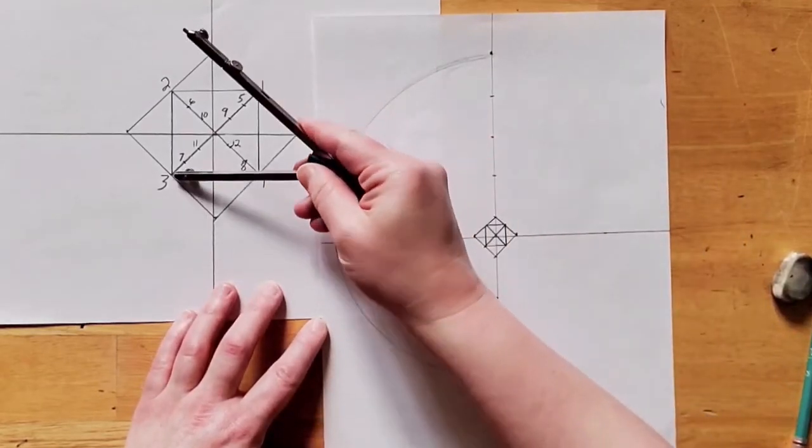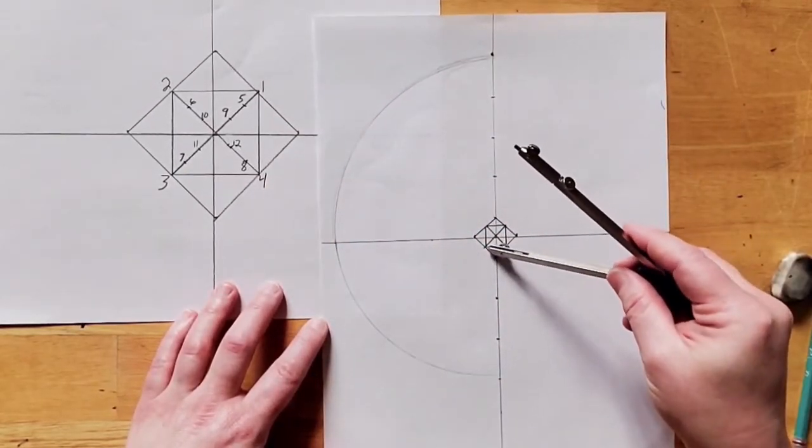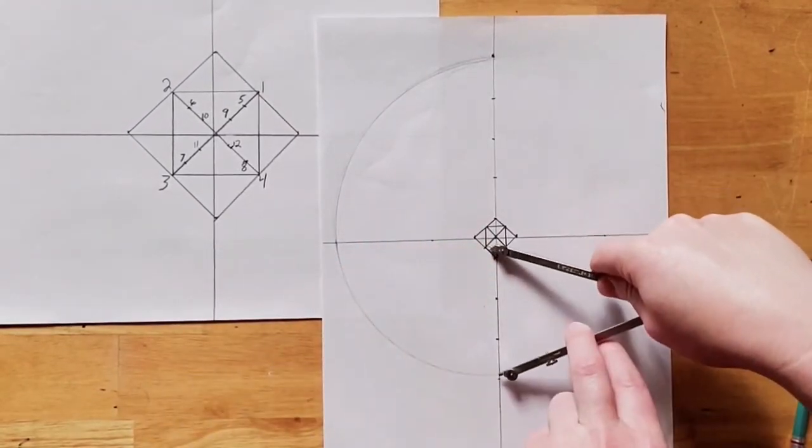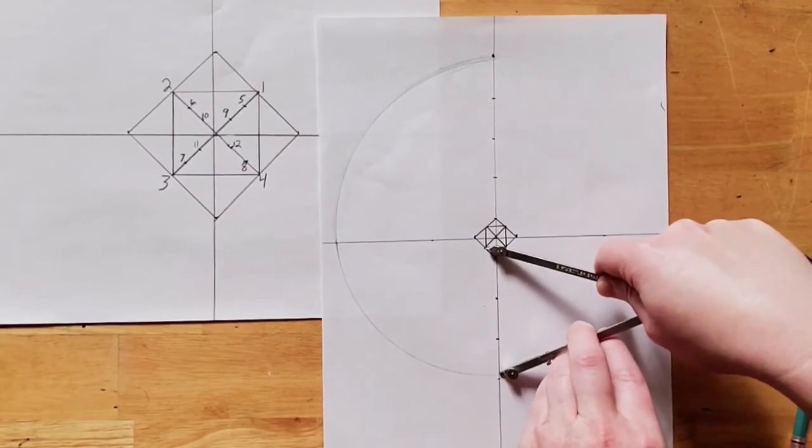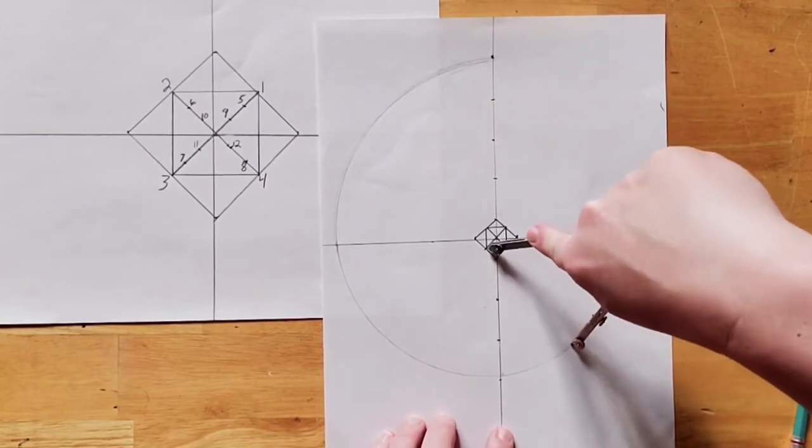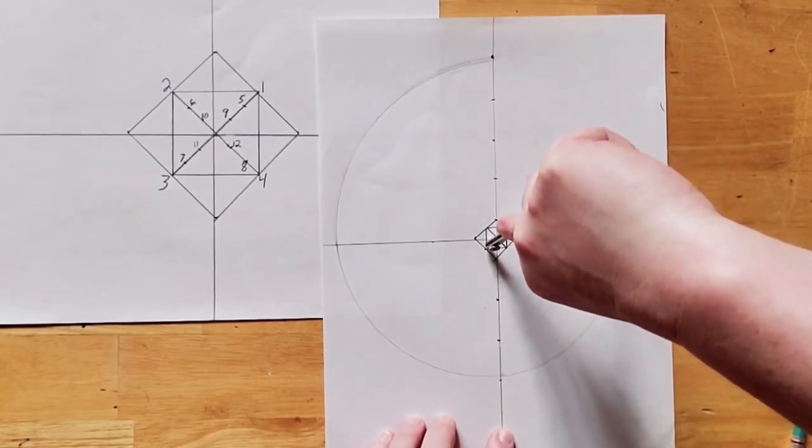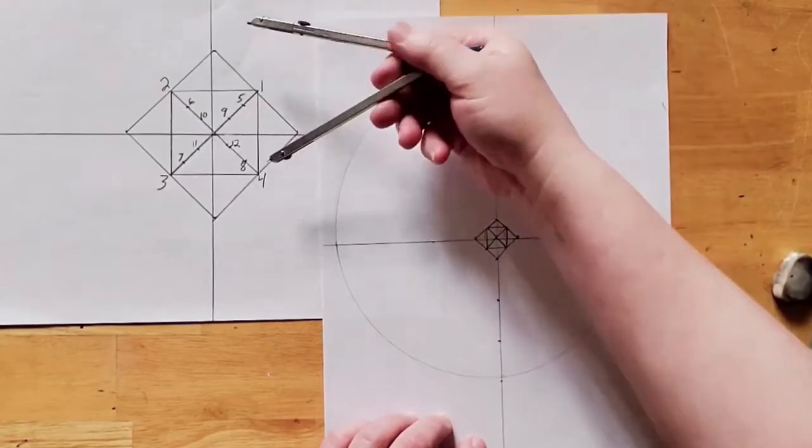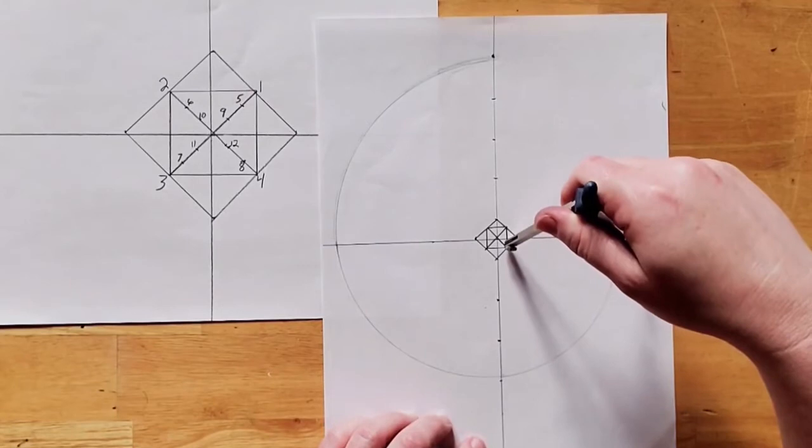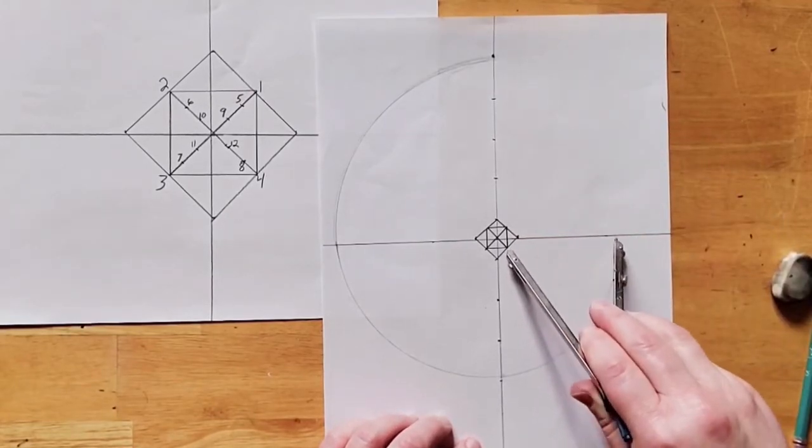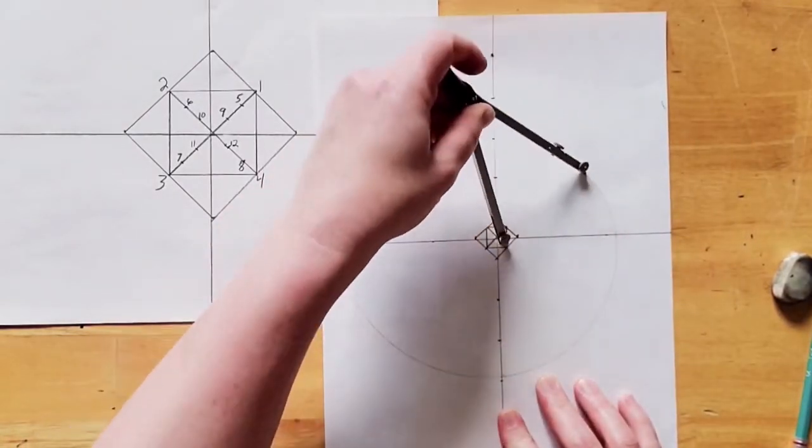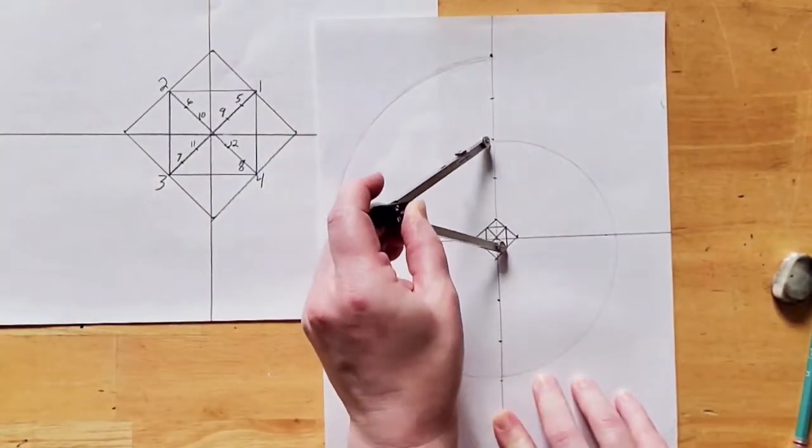Next, we're going to put the pointy end on number three, and again, shorten our compass so that the pencil end touches where we left off, and draw our curve up to the next line. Then we move to four, and again, change the angle of our compass so that it matches perfectly. Use a gentle and steady pressure as you guide the compass around to meet the line.